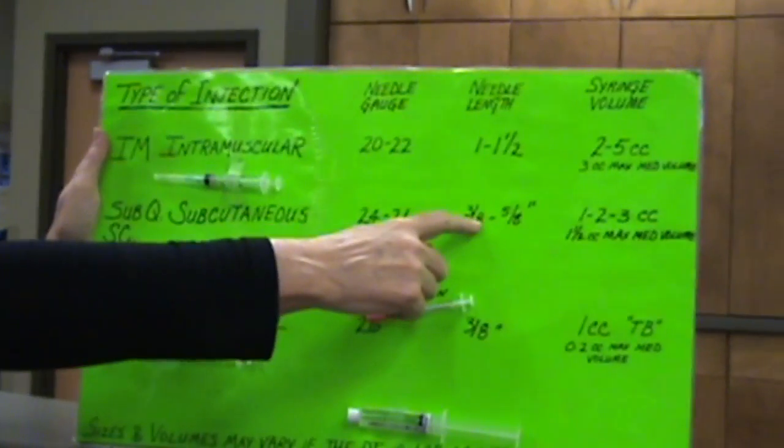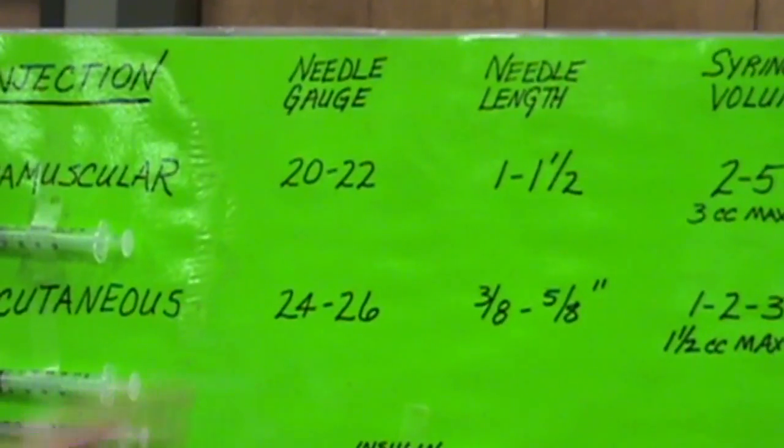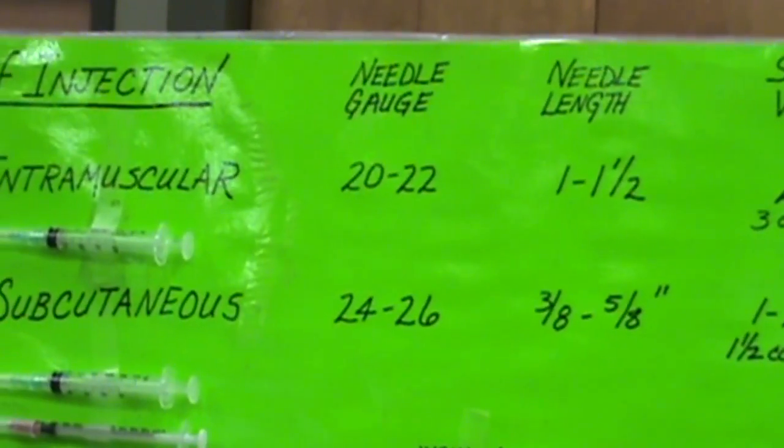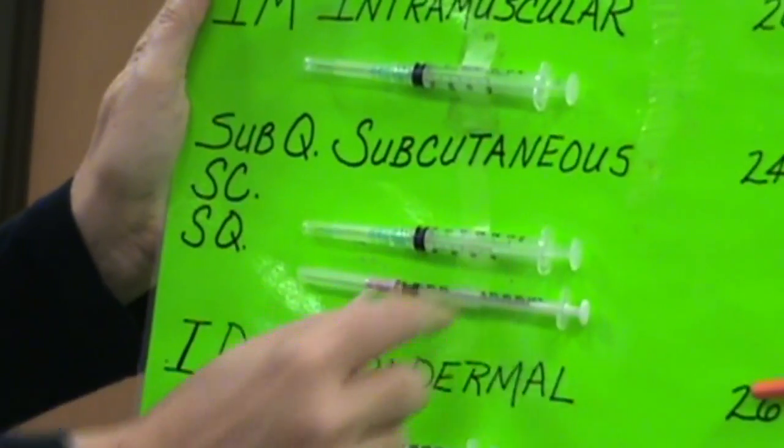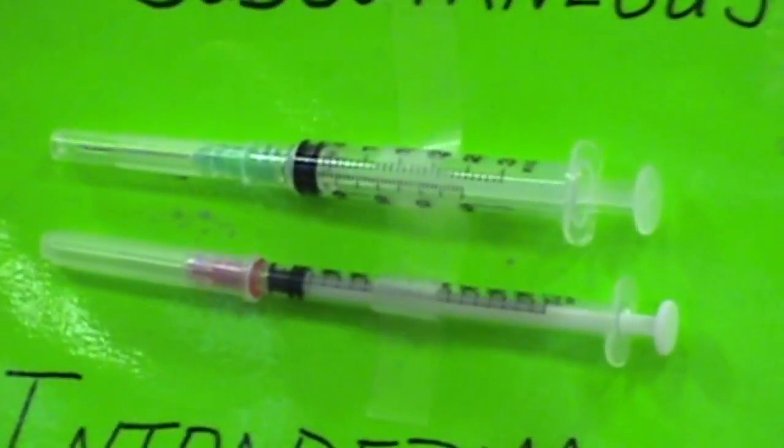You also see the needle length is less, it's going to be smaller, and the needle gauge is going to be tinier too. So this is up to a three cc, or milliliter, and this is a smaller one too.